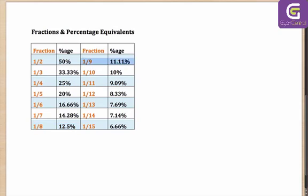Very similarly, one-ninth — one-third is 33.33, so one-ninth will be one-third of that, or one-third of 33.33. You will get, as you can see, 11.11.